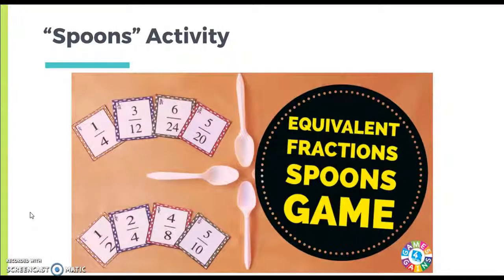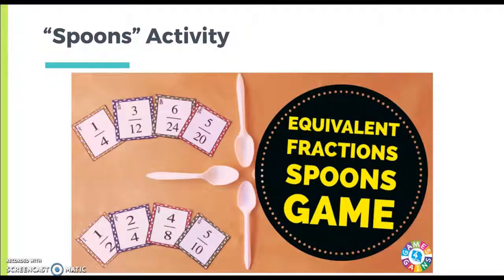The objective of the game is to be the last player remaining in each round. The winner of the round will get the first letter in the word S-P-O-O-N-S, Spoons. Future wins from a player will win him another letter from the word Spoons. The first player to get all the letters, meaning he won 6 rounds, is the winner of the game.